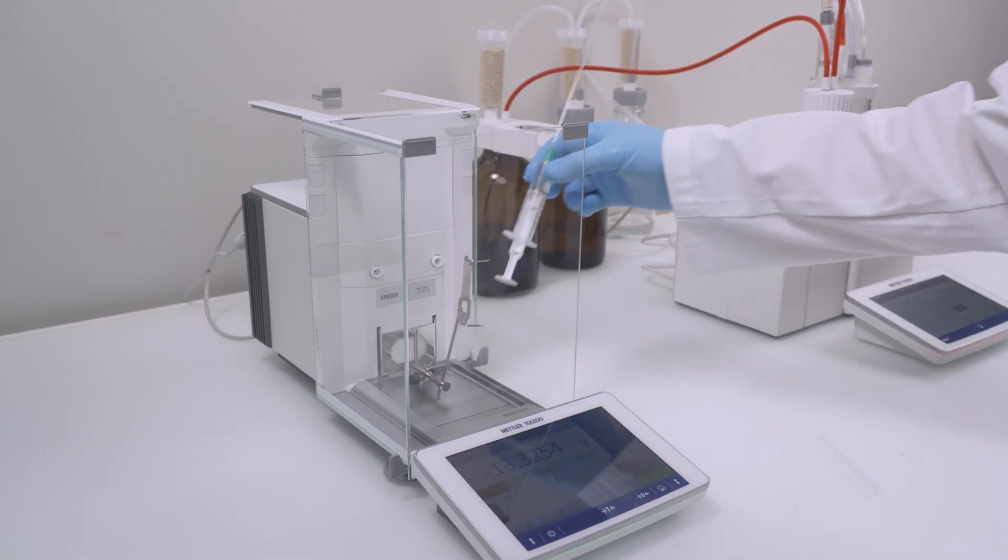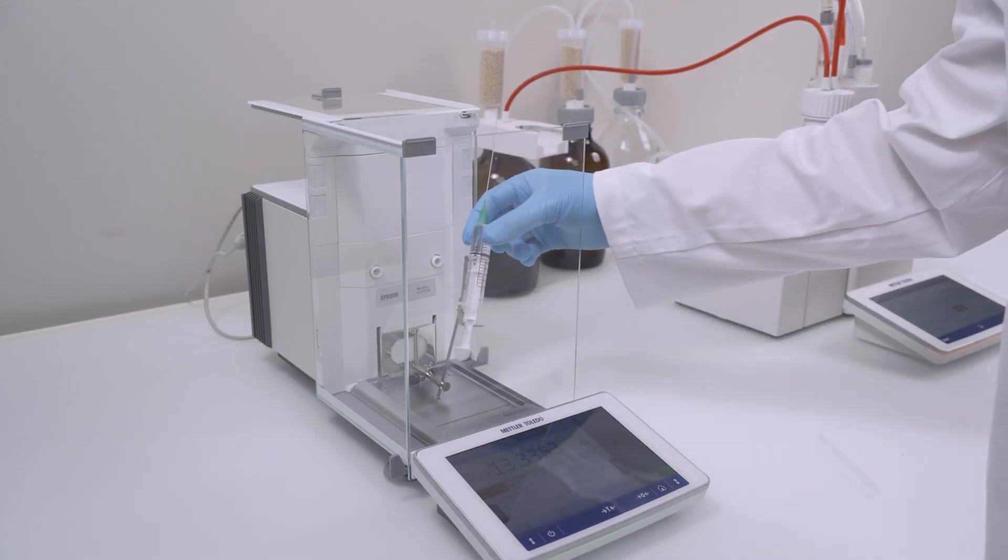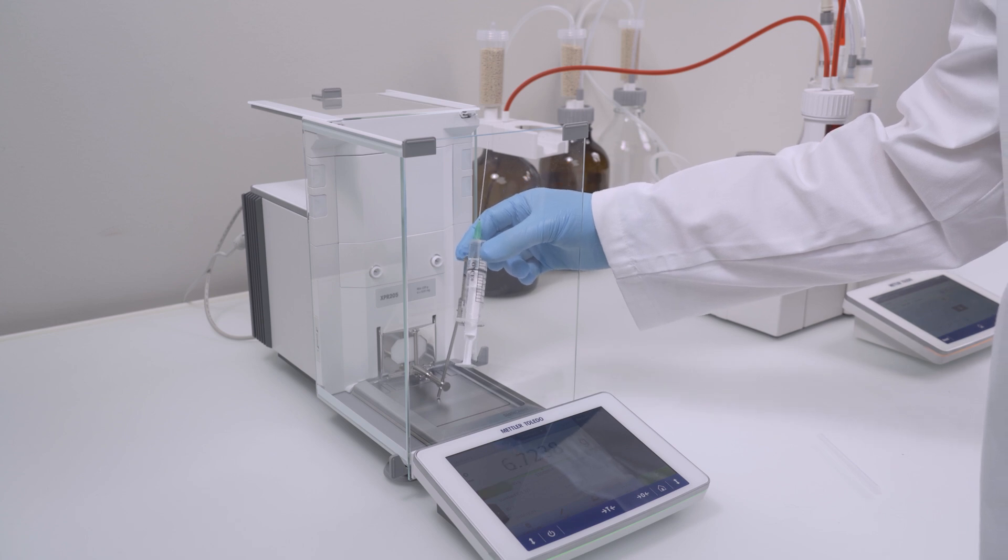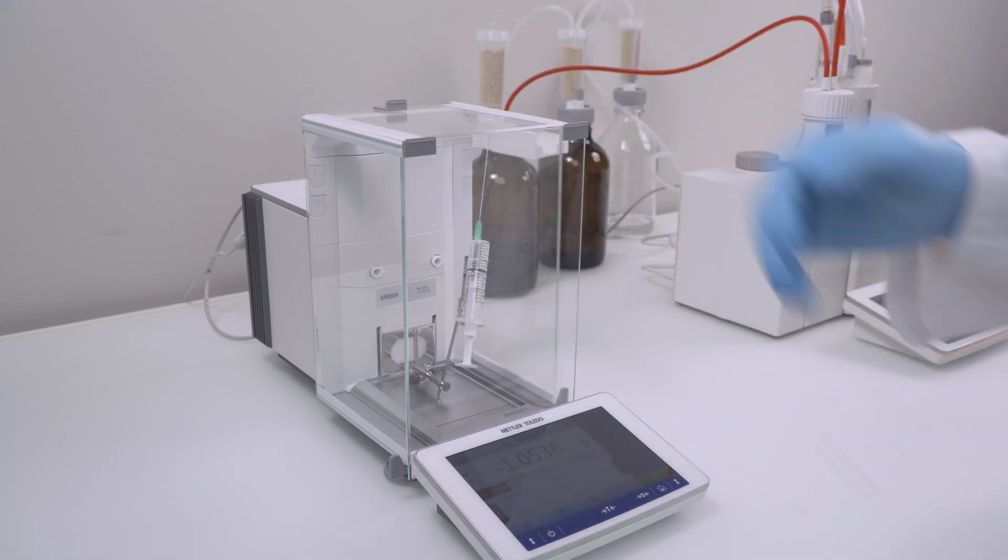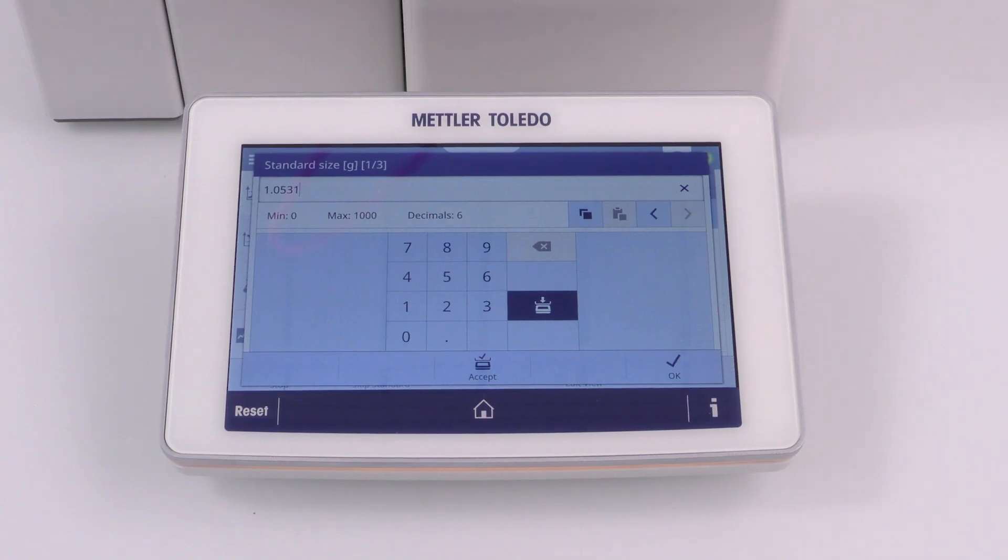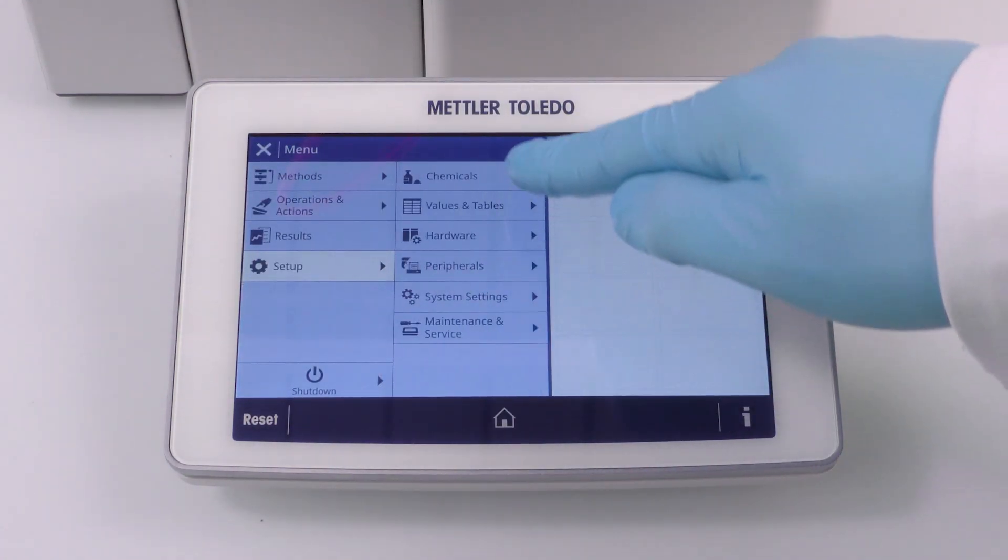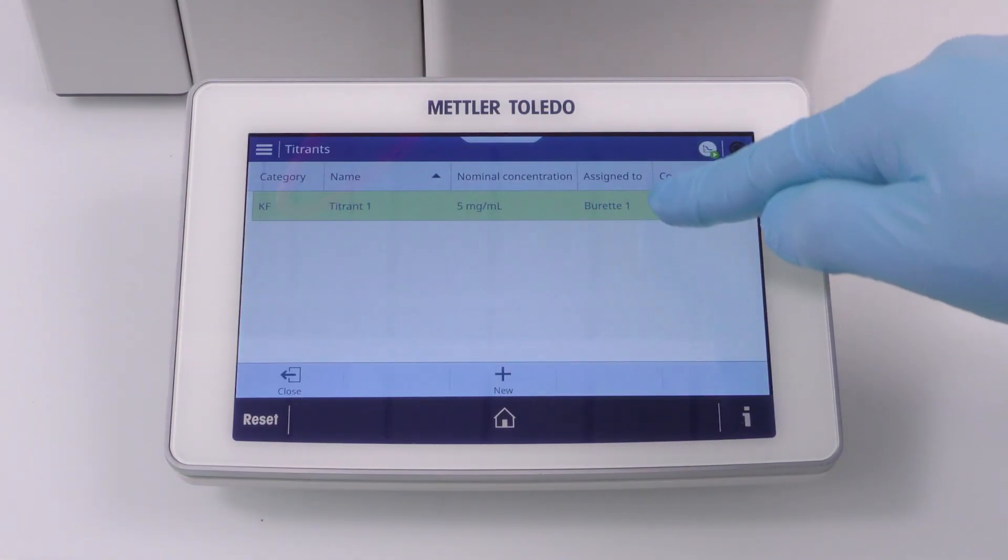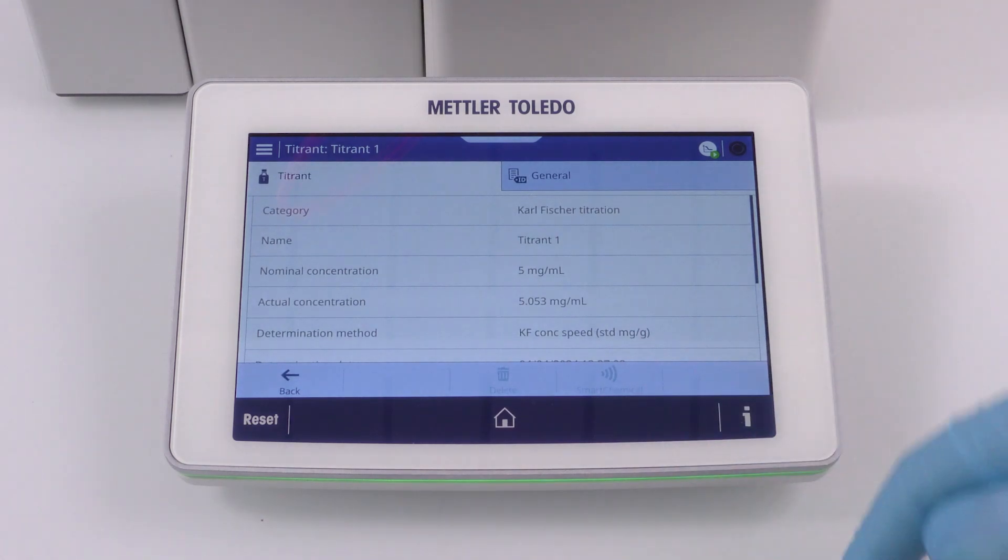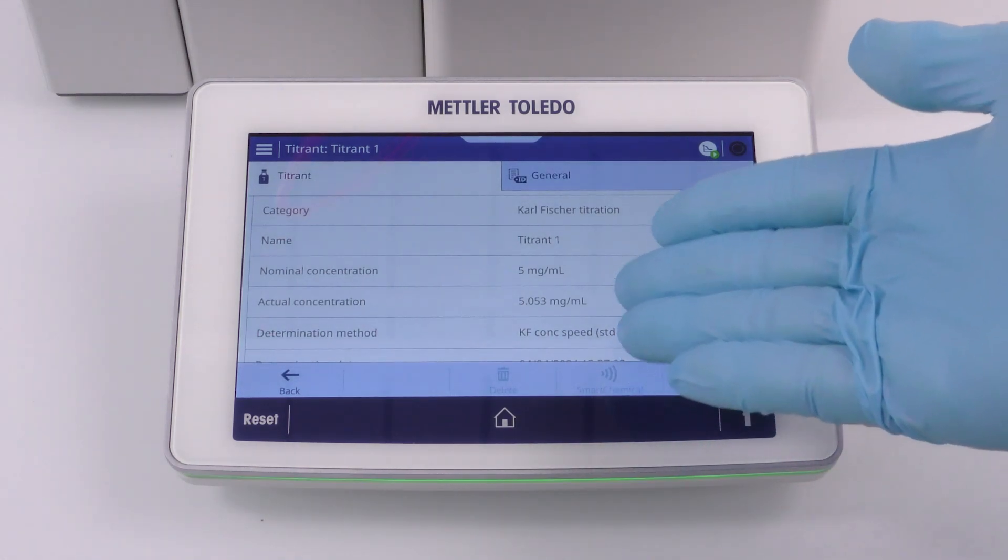After the injection of the standard, weigh back the syringe on the tared balance and enter the absolute weight on the titrator screen. On this system, the balance is connected via USB to the titrator for automatic weight transfer. So, the weight must only be confirmed, but not to be entered. Measure two more standards the same way. After all three standards are measured, the mean of the three measurements is saved as actual concentration of the titrant resource.